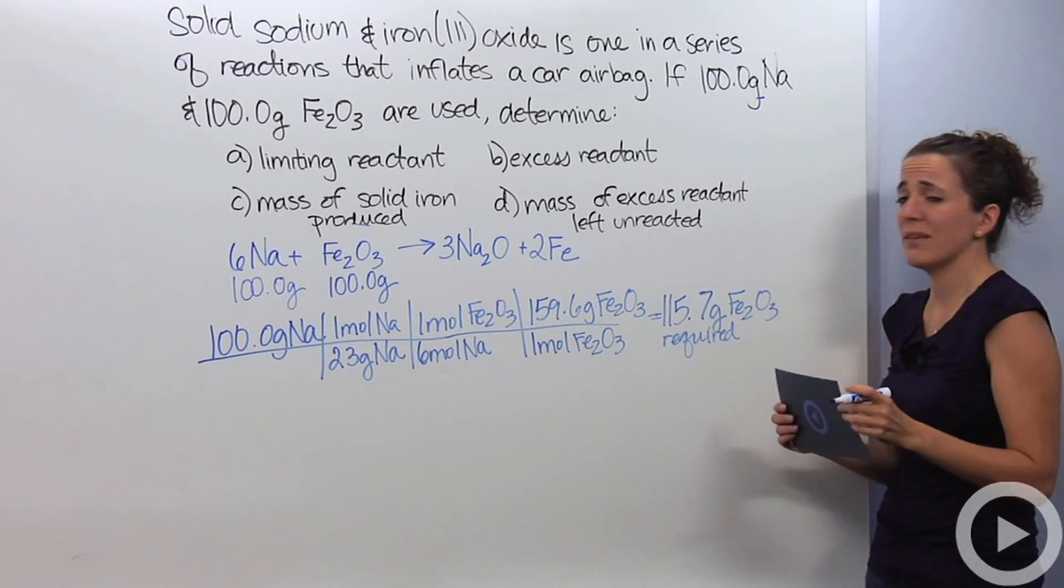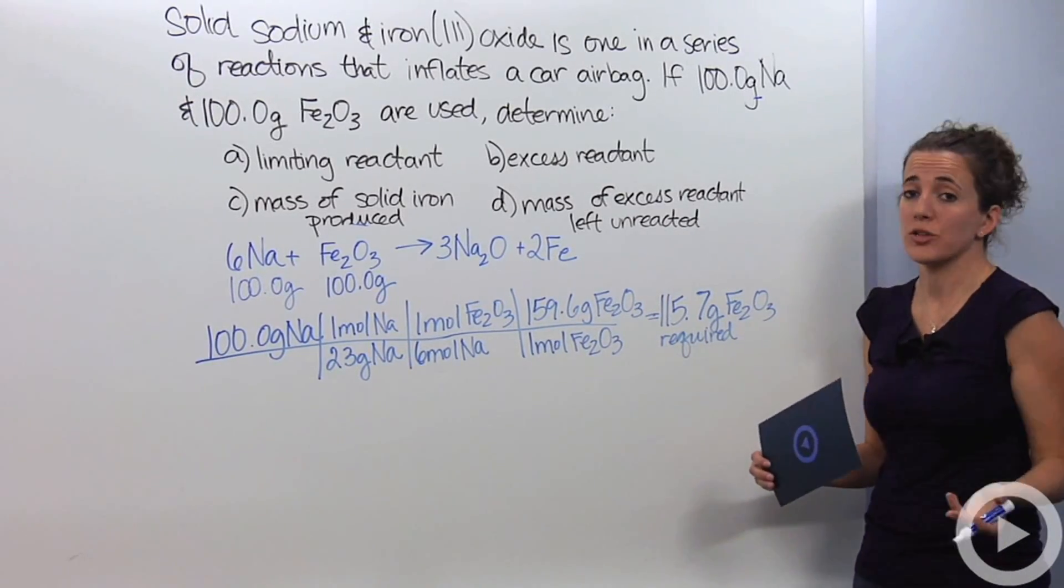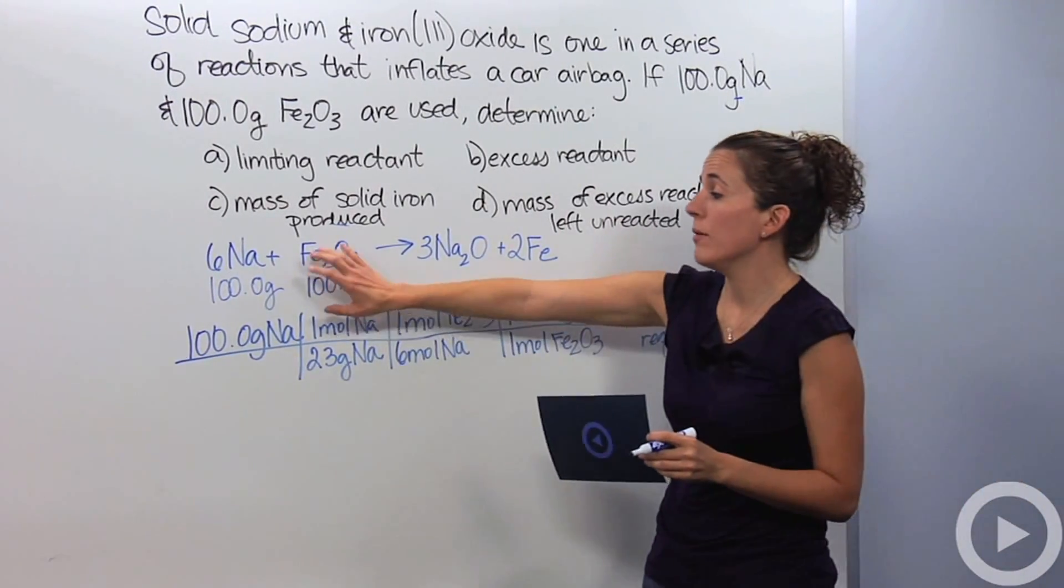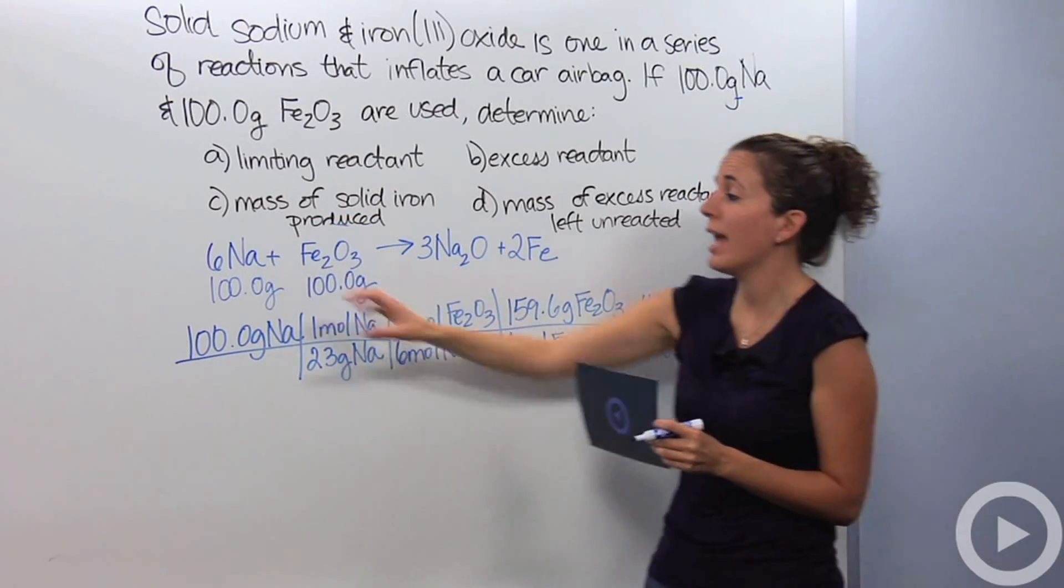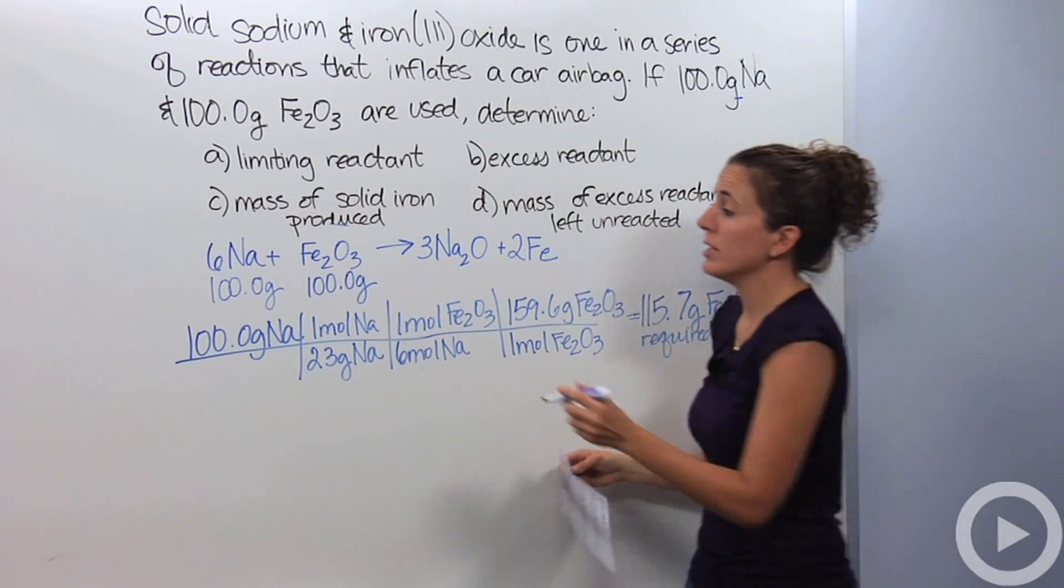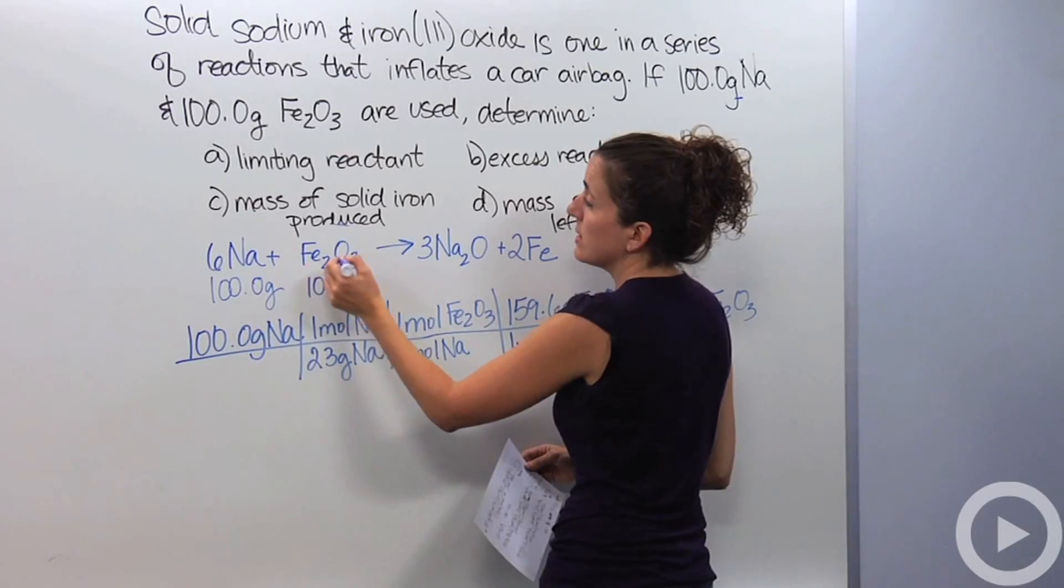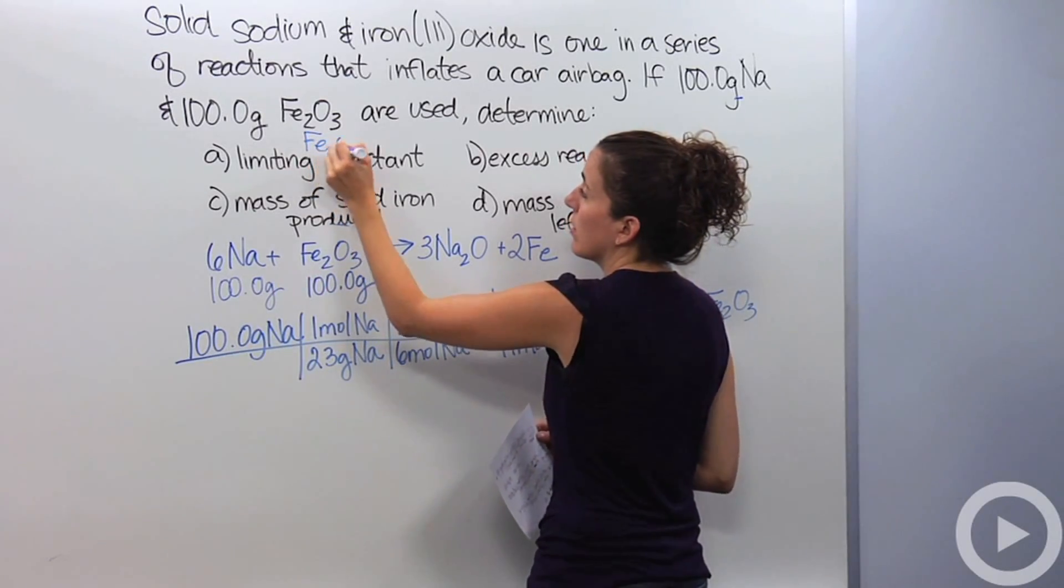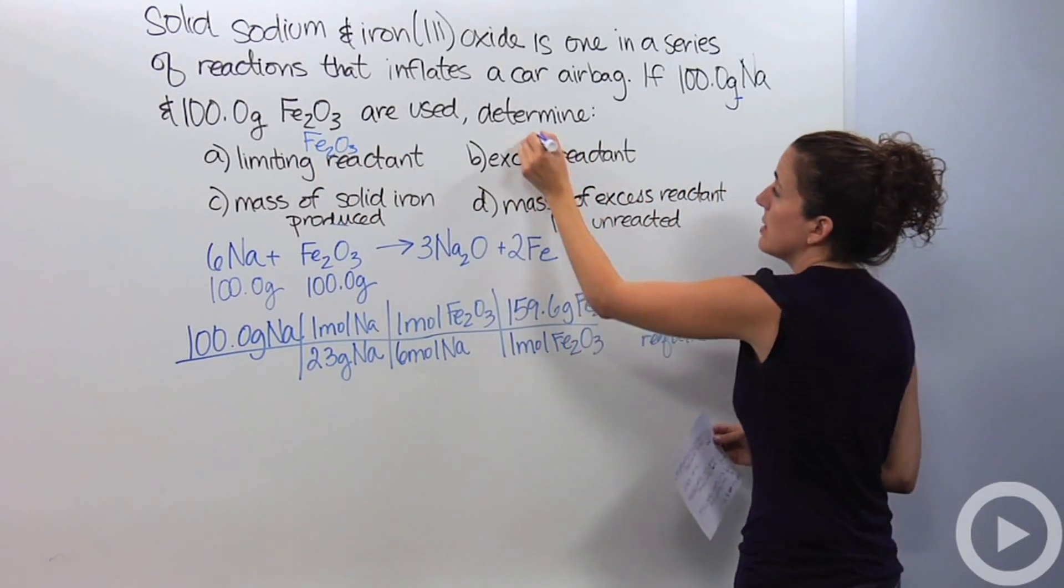Do I have 115.7 grams? No, I only have 100. So, I'm actually limited, the products are limited by the amount of Fe₂O₃. I'm going to have an excess of sodium. So, I'm going to say that my limiting reactant, in this case, is Fe₂O₃. My excess is sodium.